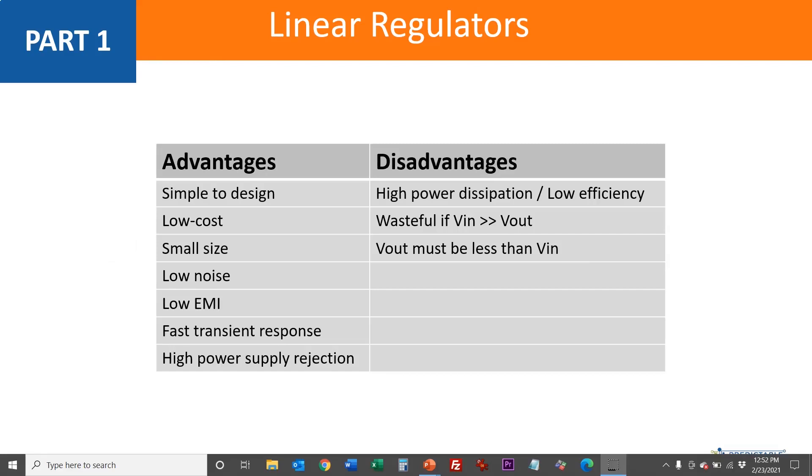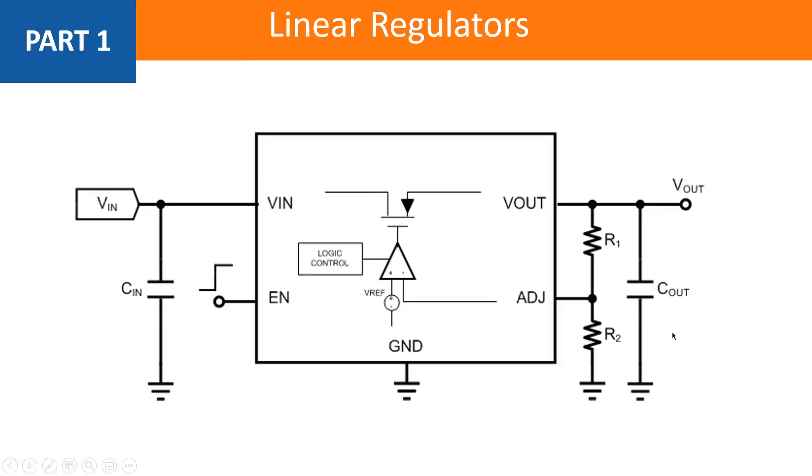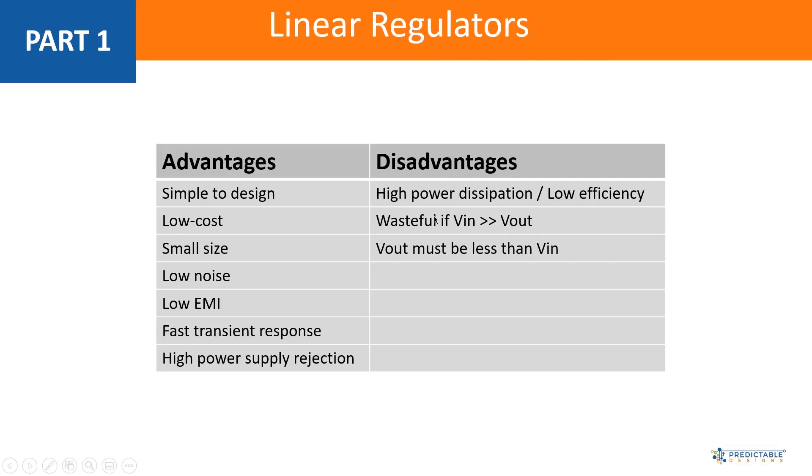The main downside or disadvantages with linear regulators is they have very high power dissipation and low efficiency. So the efficiency is a measure of how much of the input power makes it to the output. And a linear regulator under certain applications is really horrible at this. So you have a huge amount of input power and you only get a little bit out, and the rest of it's just wasted as heat. But that is only true if VIN is much larger than VOUT. So it goes back to what we were talking about on the previous slide - this headroom here. As I mentioned, if this gets large, then the linear regulator is not a good solution because it dissipates a lot of power in that case. And that's what this is saying.